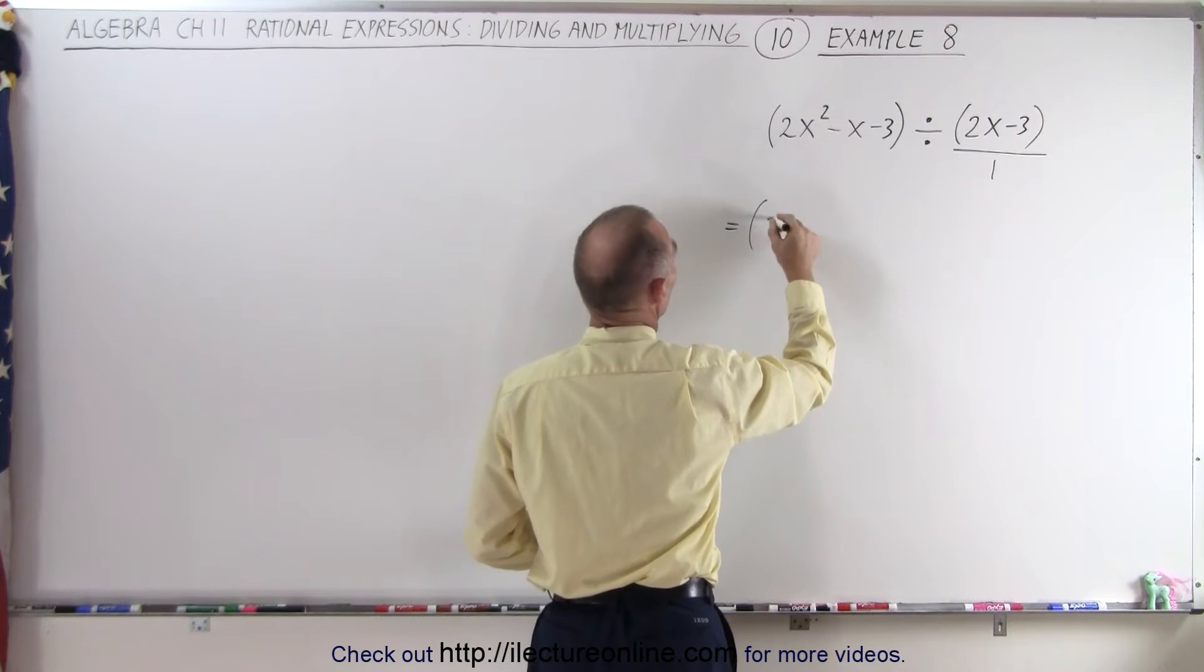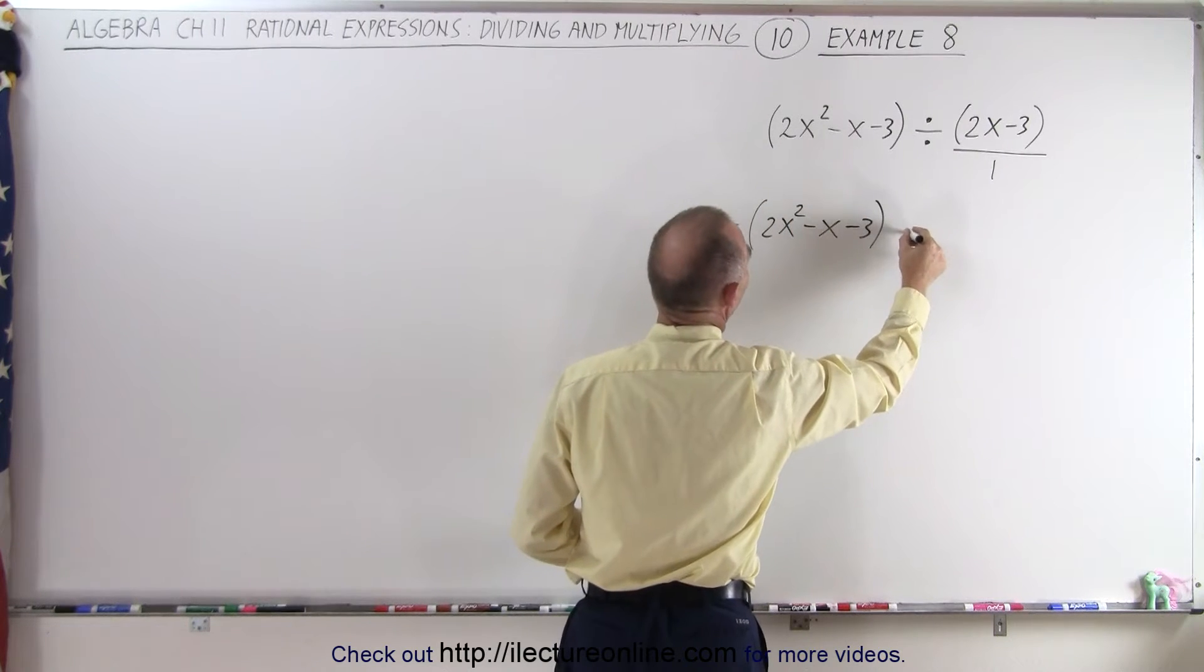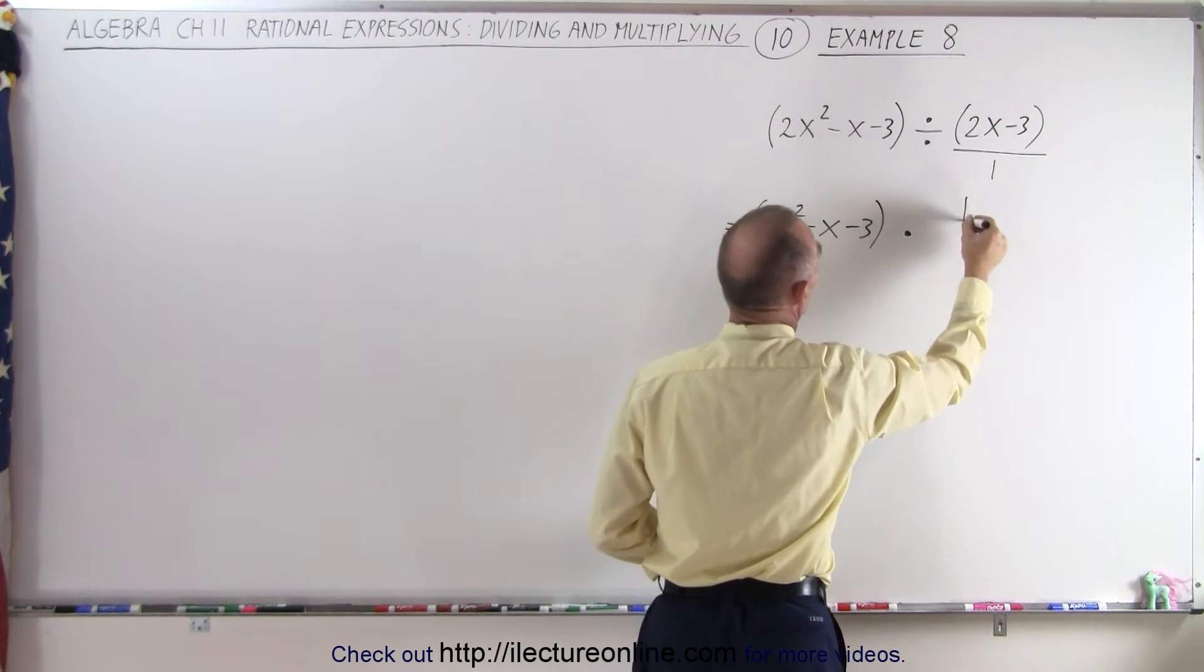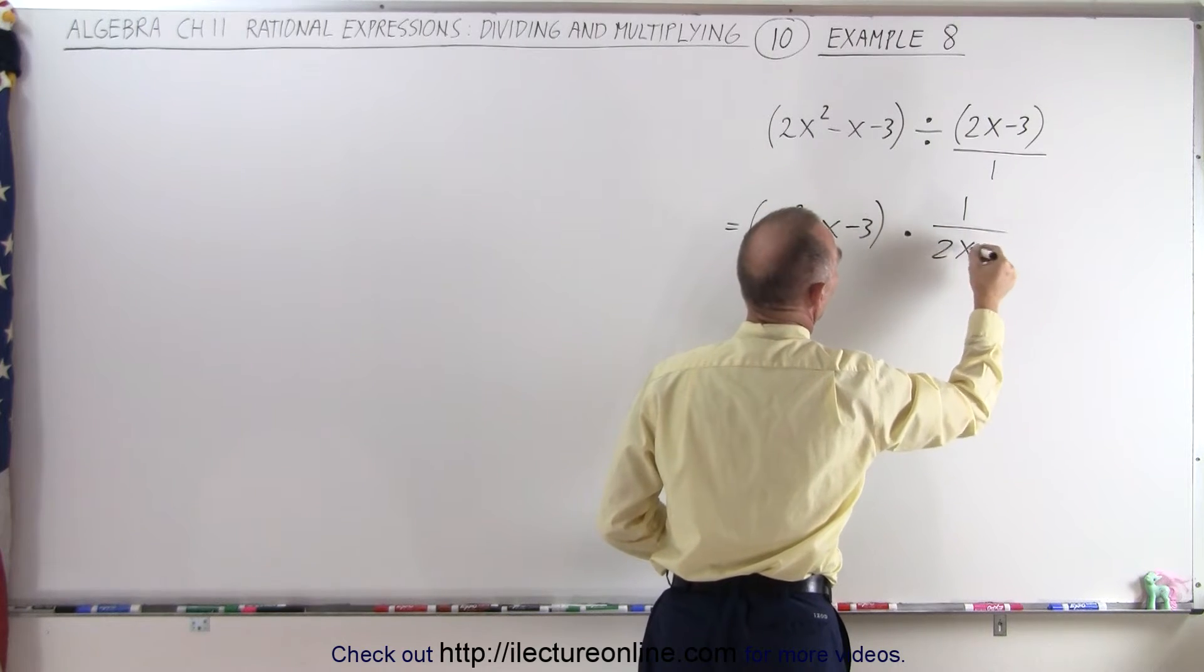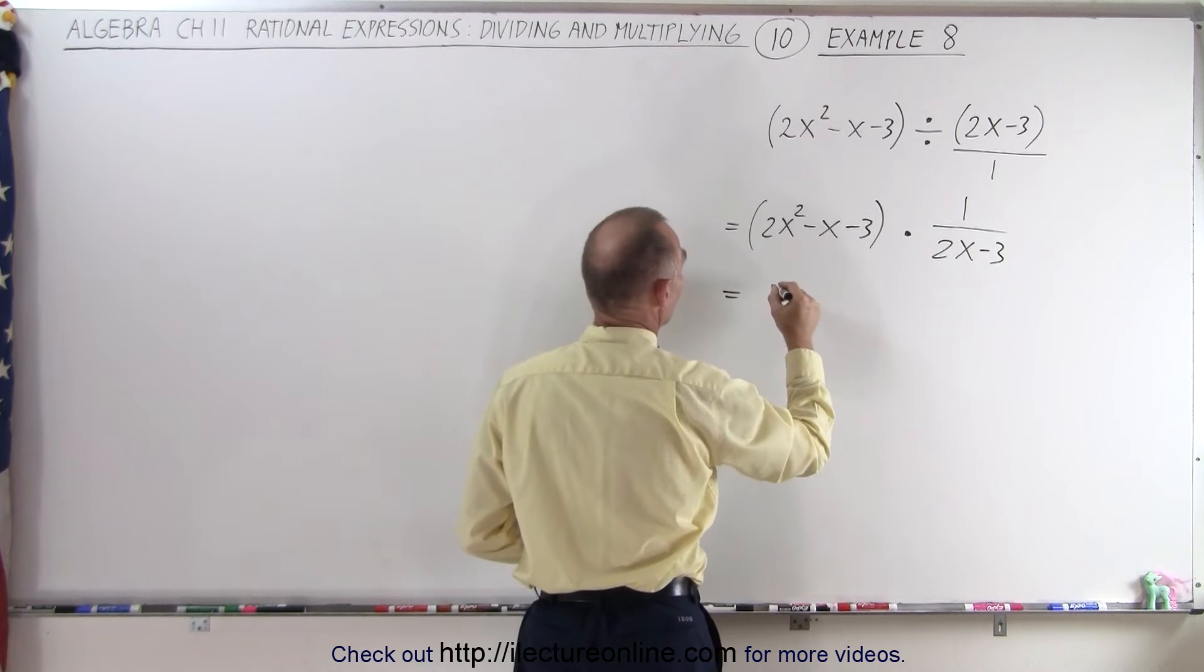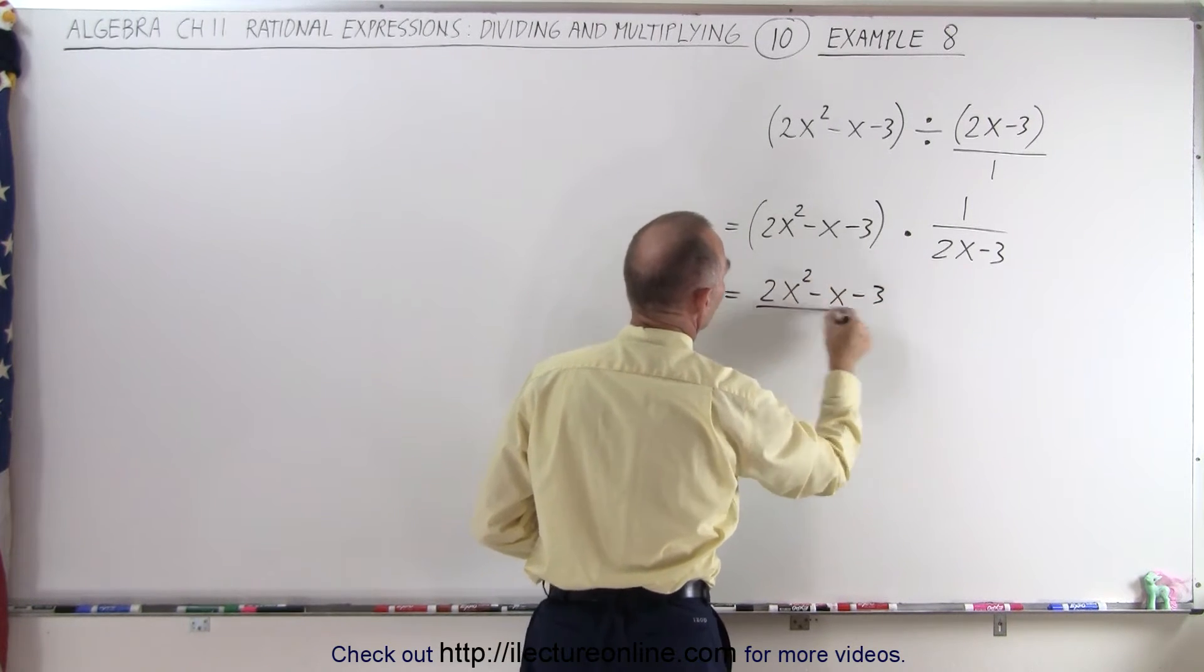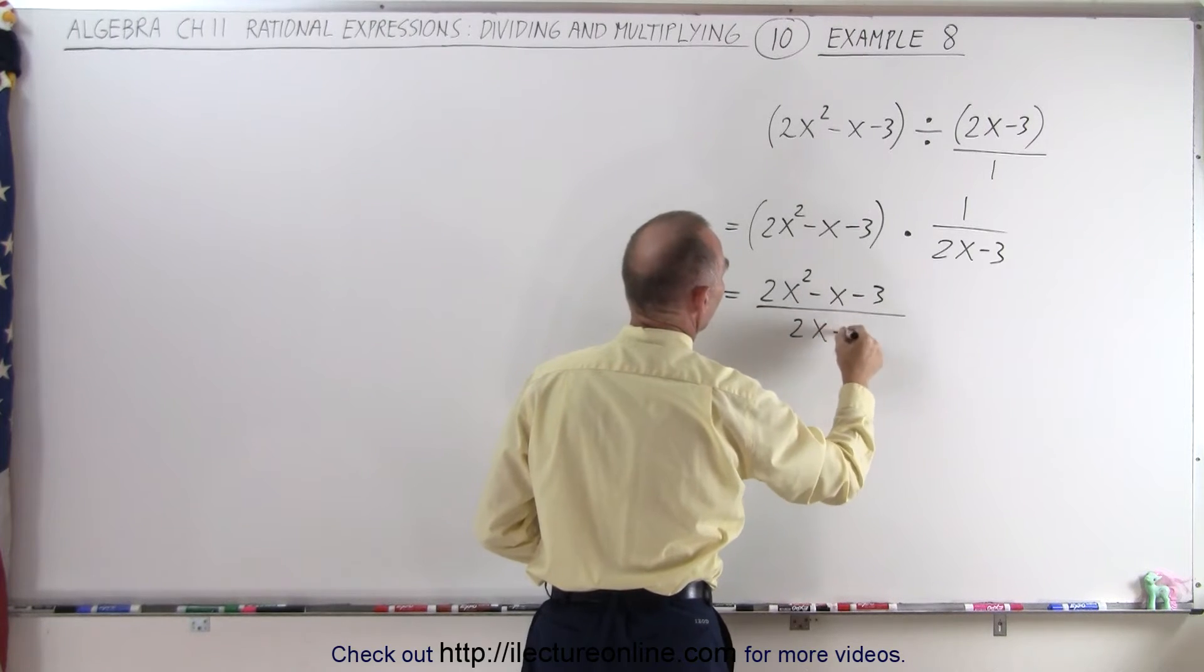And so now you can see that when we rewrite this, this can be written as 2x squared minus x minus 3 times the inverse of that, which is 1 over 2x minus 3. And then of course this can be written as the rational expression 2x squared minus x minus 3 divided by 2x minus 3.